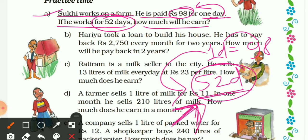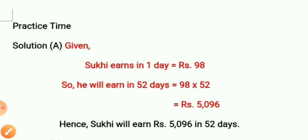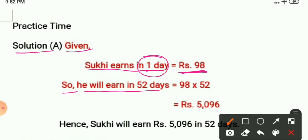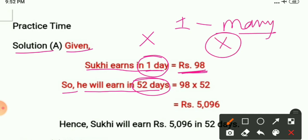Here we are going from one to many — the salary for one day is given and we are finding for 52 days. So let's look at the solution. First, write 'Given' in your notebook: Sookie earns 98 rupees in one day. Second, find what he earns in 52 days. Since we are finding the value from one to many, we will multiply.